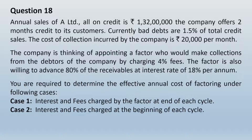The company is thinking of appointing a factor who would make collections from the debtors by charging 4 percent fees. The factor is also willing to advance 80 percent of the receivables at an interest rate of 18 percent per annum. We are required to determine the effective annual cost of factoring under two cases: Case 1 — interest and fees charged at end of each cycle, and Case 2 — interest and fees charged at the beginning of each cycle.